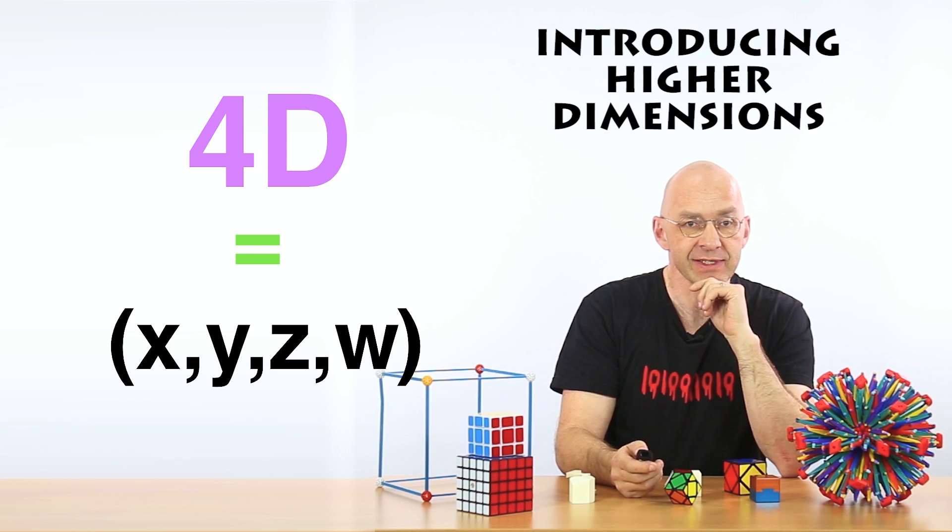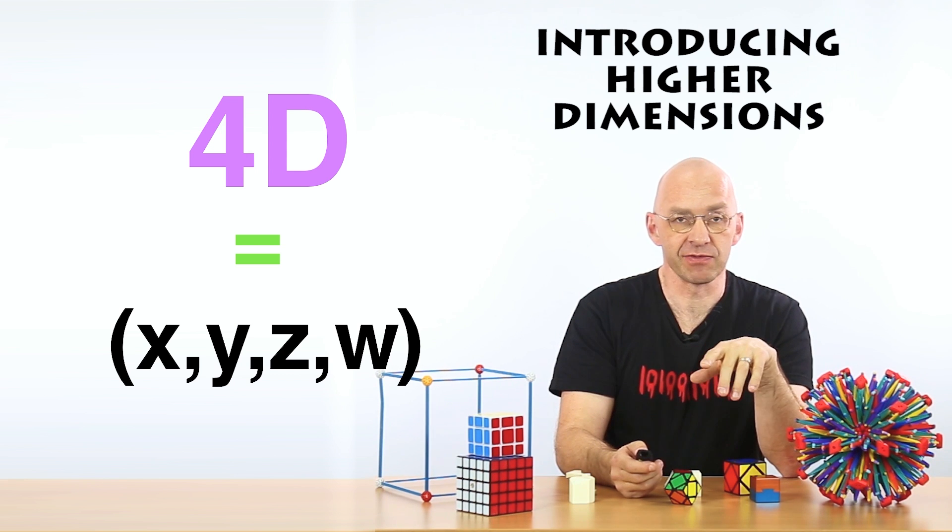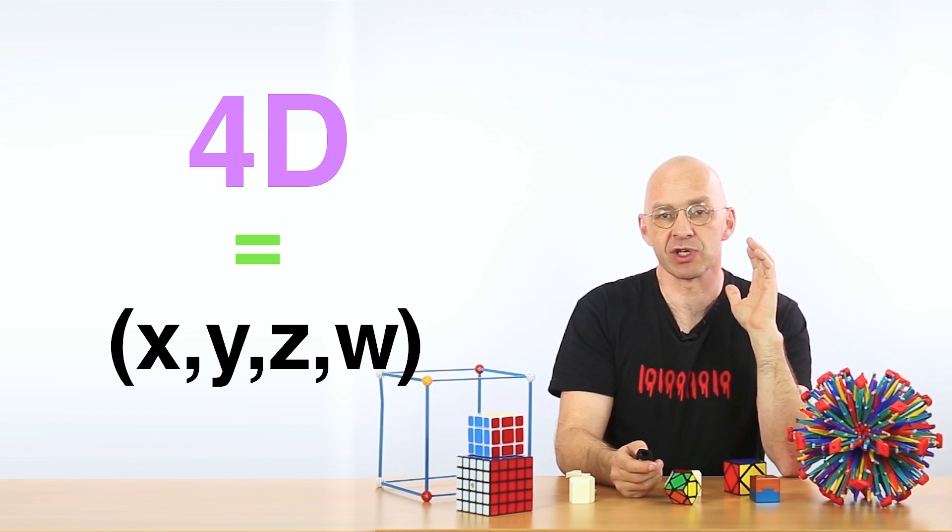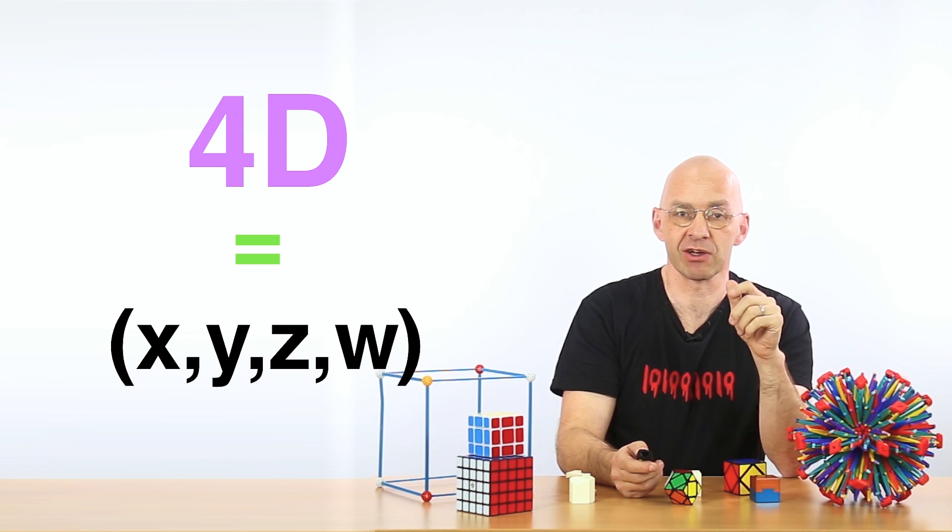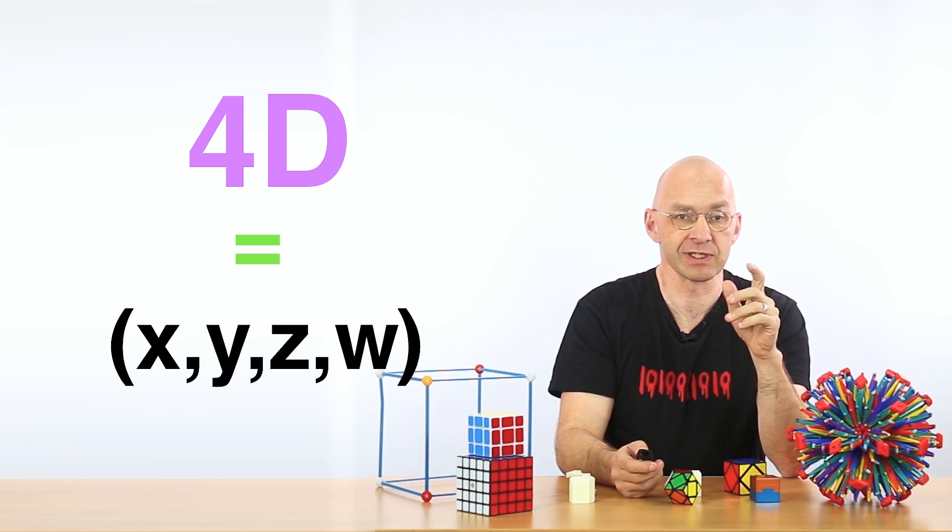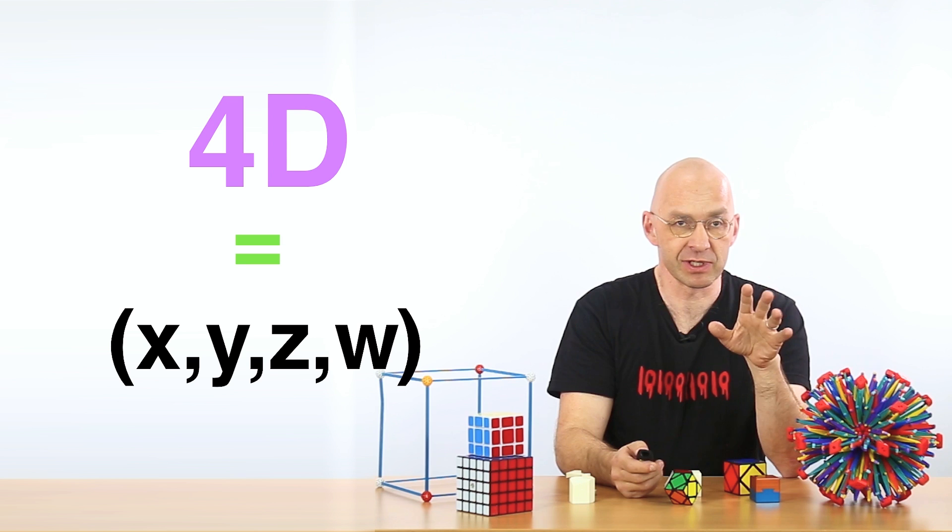Okay, now I'll show you exactly how all this is done in the next video. But to understand what the shadow theorem pans out to be for 4D unit cubes for example, you don't need to know any more details. Alright?